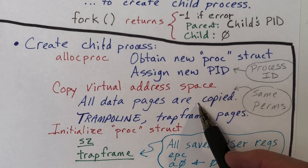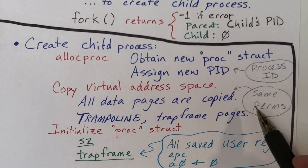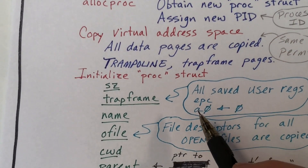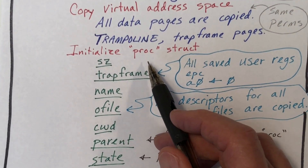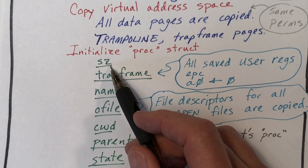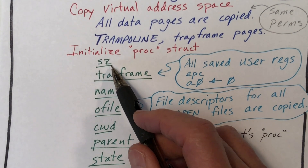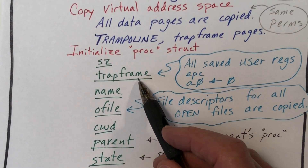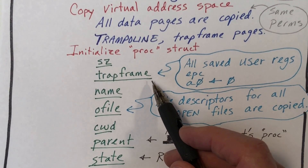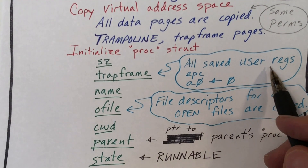The permissions on each data page in the child will be set to be exactly the same as the permissions on the corresponding page in the parent's virtual address space. Then we initialize and set a few of the fields in the proc structure. The size field is the number of bytes in the virtual address space — since the virtual address space starts at zero, that's just the same as the break address at the top of the heap. So that's copied. Next, we copy the trap frame. When the system call was made in the parent process, all the registers of the user process were saved, as well as the program counter, and those were saved in the trap frame.